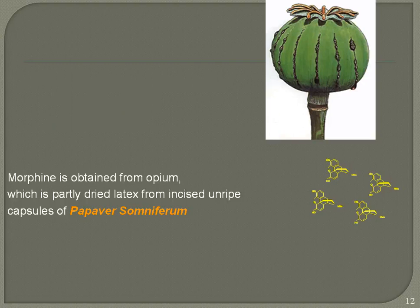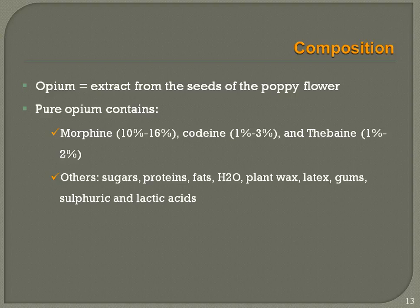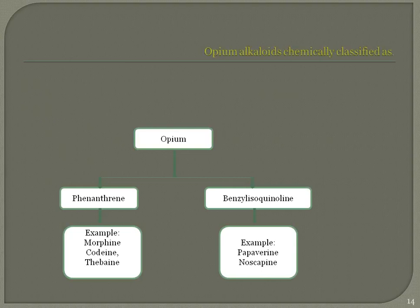Pure opium extracted from seeds of the poppy flower contains 10–16% morphine, 1–3% codeine, and thebaine at 1–2%. Other constituents include sugars, protein, fats, water, plant wax, latex, and sulfuric and lactic acids.